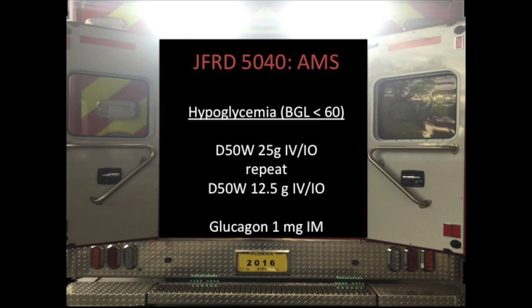Hypoglycemia is going to be your main one. You can't imagine how many patients come in with altered mental status and 20-30 minutes later we realize their sugar was just low and we missed the easy stuff. Never miss the easy stuff — always get a glucose and accu-check. Per your protocols, you're able to give D50, 25 grams IV or IO, and then repeat a half dose after that. Glucagon is your go-to if you're not able to get an IV. Do not miss the basics — you feel really dumb if you call a stroke alert and the glucose ends up being 25.